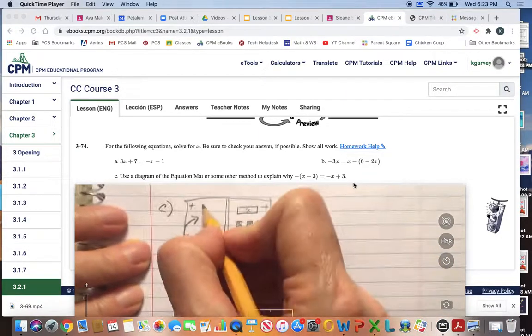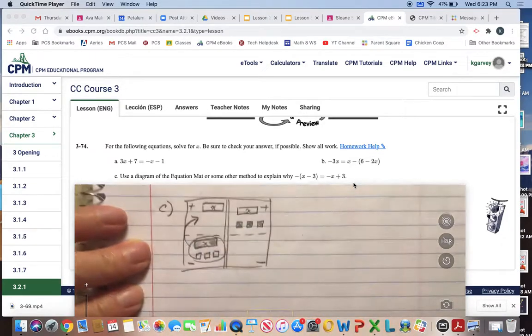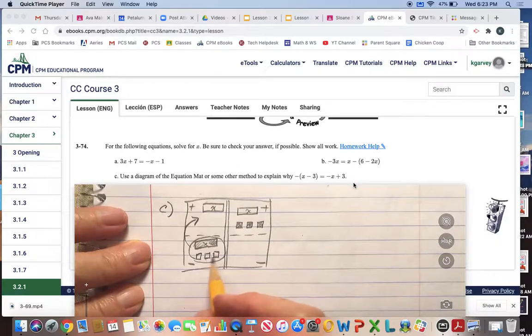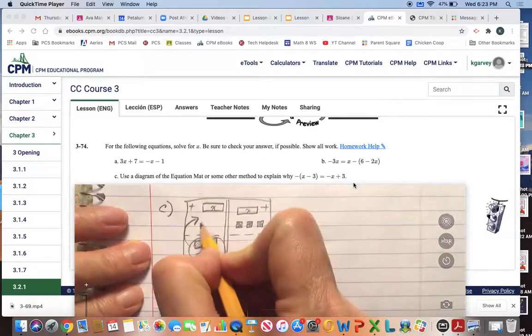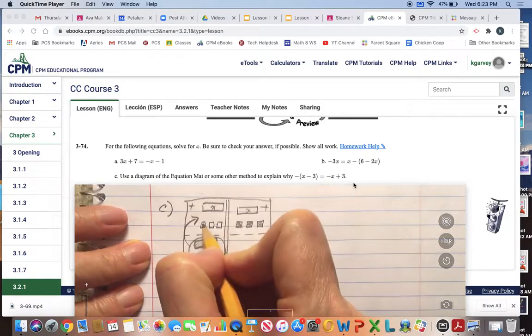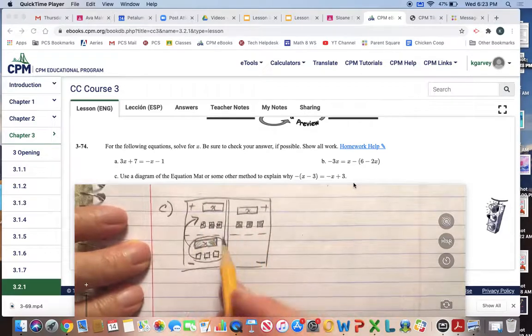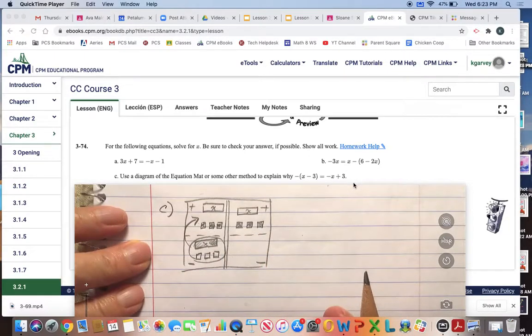The x tile, it's positive here, and it becomes negative up here. These little three guys are negative, and they become positive because we flip them over. So now both sides match. That's one way to show it.